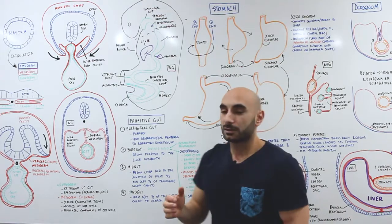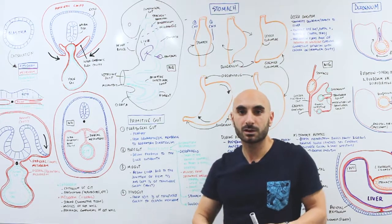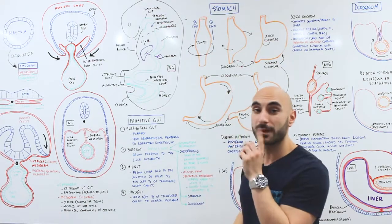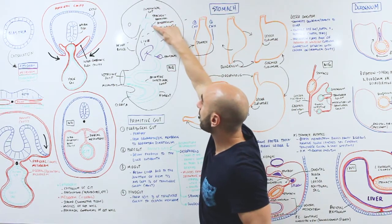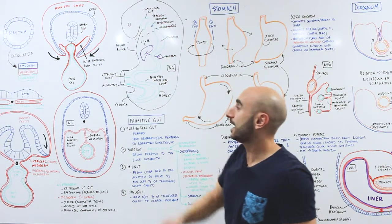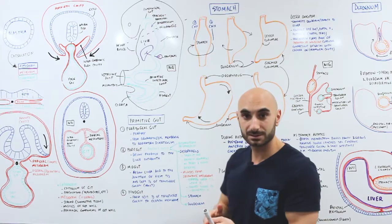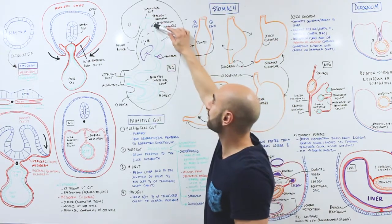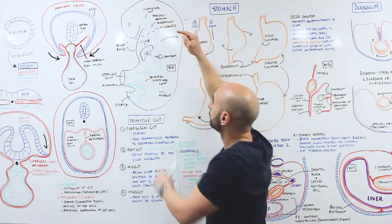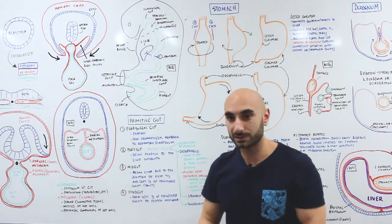Now the primitive gut has four segments. You've probably heard of the three segments — the foregut, midgut, and hindgut — but I'd like to add an extra one: the pharyngeal gut, which goes from the oropharyngeal membrane to the respiratory diverticulum. So the first segment of the GIT is the pharynx. For this video, we're focusing on just the foregut: the esophagus, the stomach, and the proximal part of the duodenum.